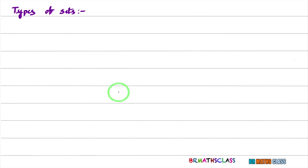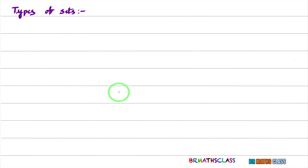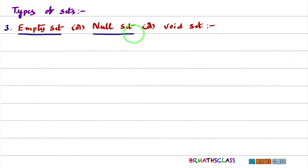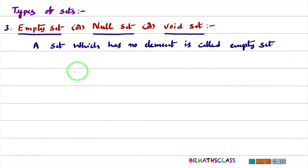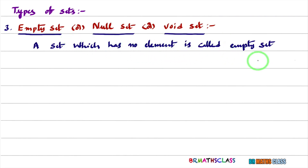Now we will learn types of sets. First we will learn about empty set. Empty set is also known as null set, and it is also known as void set. A set which has no element is called empty set.